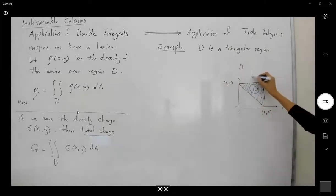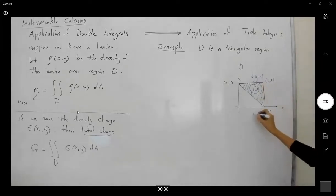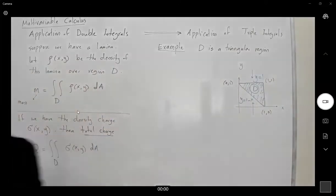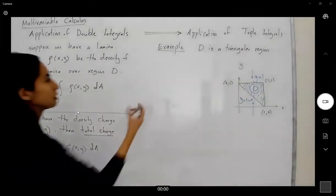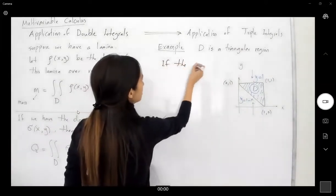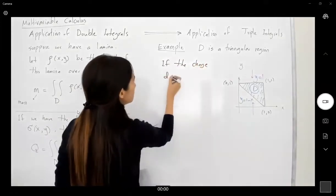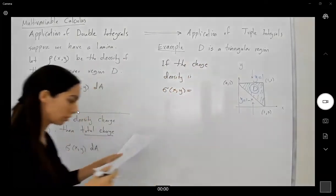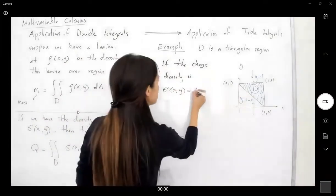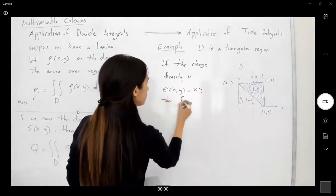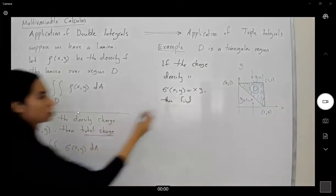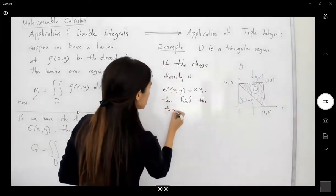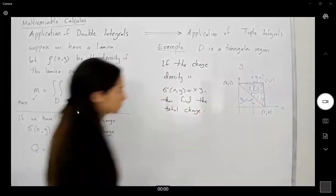From top, it's bounded by y equals 1. And from down below, it's bounded by y equals 1 minus x. Question says, if the charge density is given by function sigma(x,y) equals xy, then find the total charge.